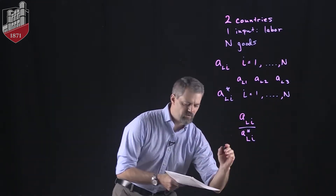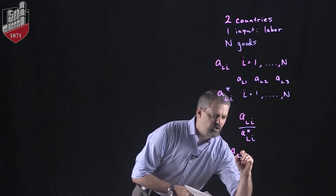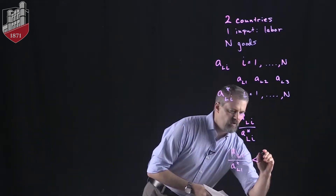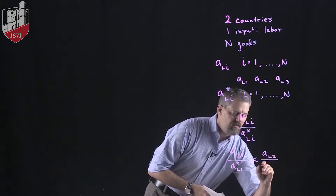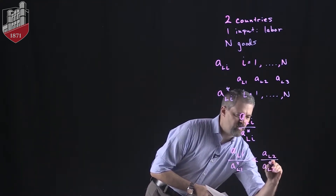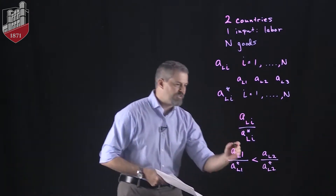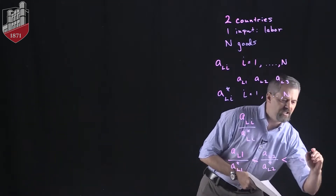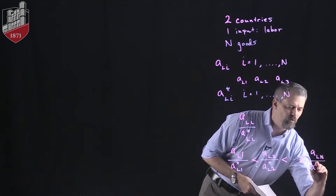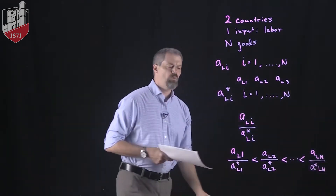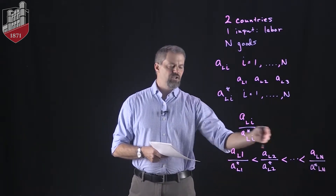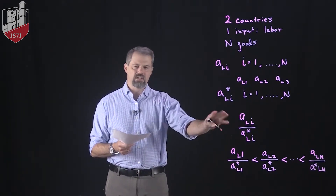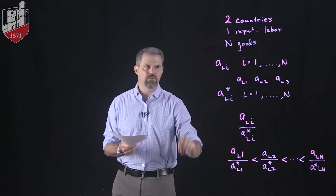The ordering will be such that the ratio for good 1 (home ULR divided by foreign ULR) is the smallest, the ratio for good 2 is larger, and so on, until we reach the largest ratio for good N. We simply order the goods so that this ratio ordering holds. That may seem strange, but it's actually easy to set up, as you'll see in the textbook, and I'll give you an example shortly.